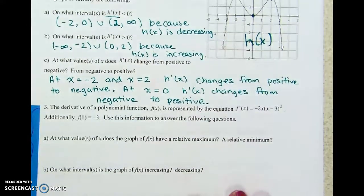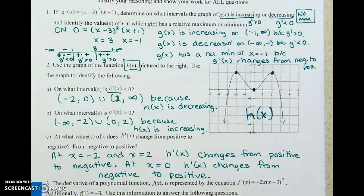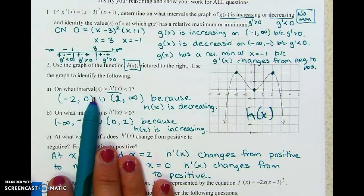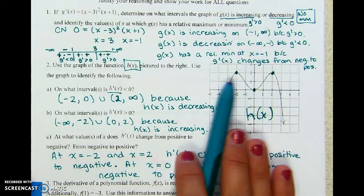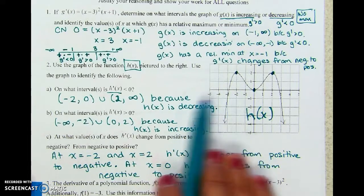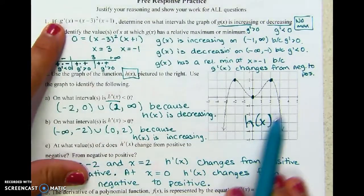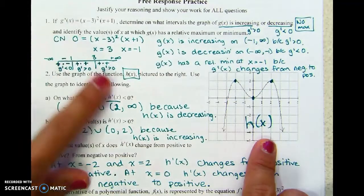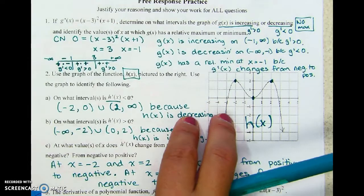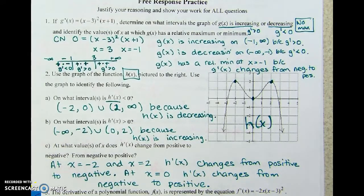That's the end of this first video — two completely different question types. You have to keep track of what you're analyzing and what the question is asking. It will always give you one thing but ask about something else: give you the derivative and ask about the original, or give you the original and ask about the derivative. Annotate the question, make the switch, and use your memorized definitions.